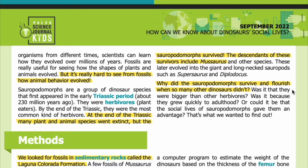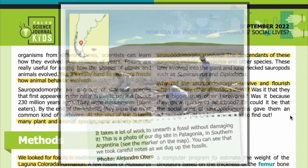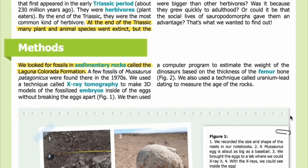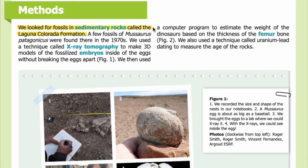Why did the sauropodomorphs survive and flourish when so many other dinosaurs didn't? Was it that they were bigger than other herbivores? Was it because they grew quickly to adulthood? Or could it be that the social lives of sauropodomorphs gave them an advantage? That's what we wanted to find out. It takes a lot of work to unearth a fossil without damaging it. This is a photo of our dig site in Patagonia in southern Argentina — you can see the location on the map inset in the upper left.